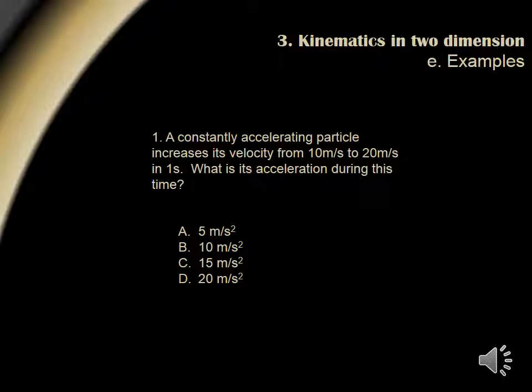Question 1. A constantly accelerating particle increases its velocity from 10 meters per second to 20 meters per second in one second. What is its acceleration during this time? We are given initial velocity, final velocity, time, and want to calculate the acceleration. Since there is no mention of distance, we use the first kinematic equation, ZOOT or VAT, which is V final equals V initial plus AT. We plug in 20 for our final velocity, 10 for our initial velocity, 1 second for our time, and solve for acceleration. The acceleration is equal to 10 meters per second squared, or answer choice B.